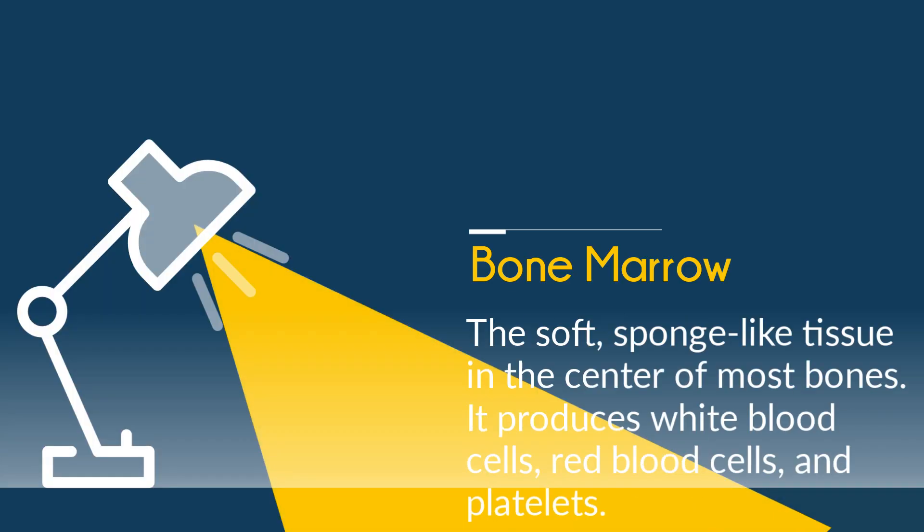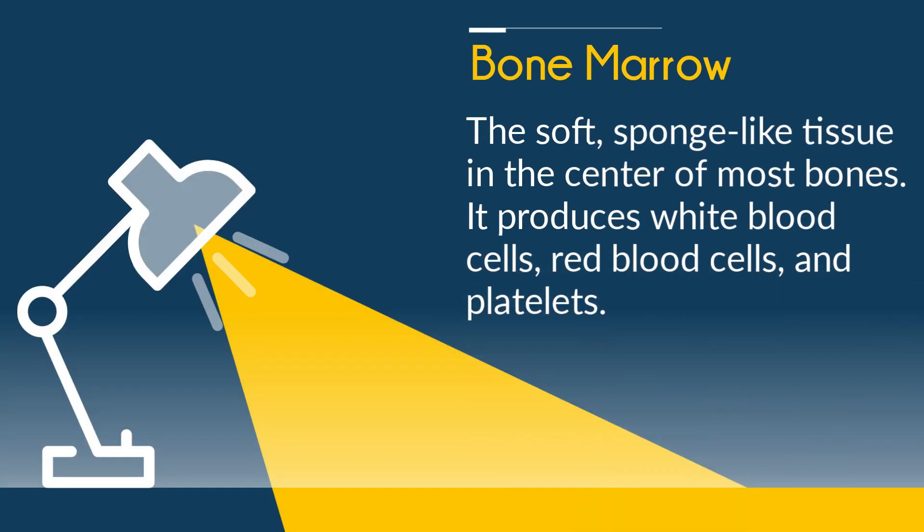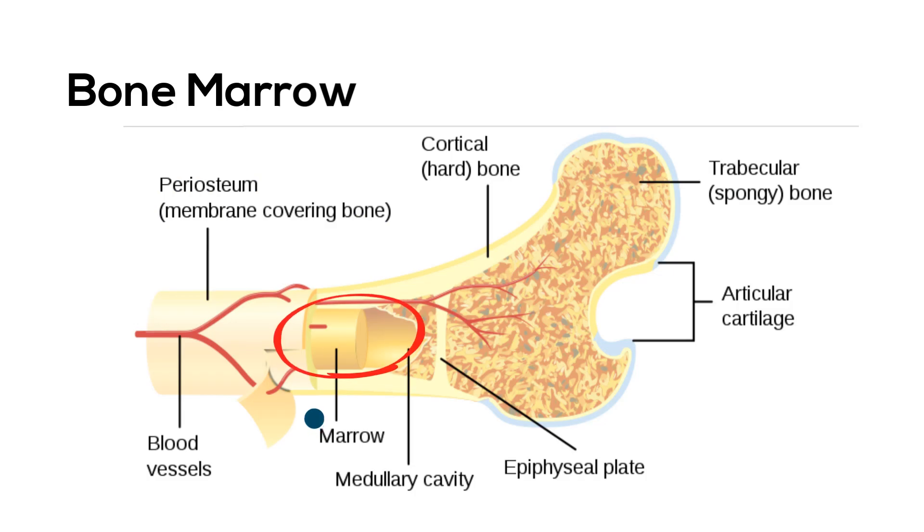Up first, bone marrow. The soft, sponge-like tissue in the center of most bones. It produces white blood cells, red blood cells, and platelets. And here's what bone marrow looks like.